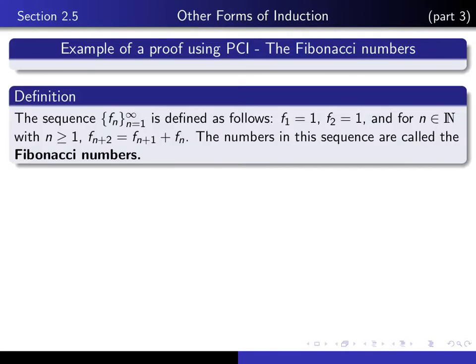So here we give the inductive definition of the sequence of Fibonacci numbers. We define f sub 1 to be 1, f sub 2 to be 1, and for any natural number n bigger than or equal to 1, we define f sub n plus 2 to be f sub n plus 1 plus f sub n.